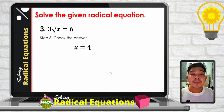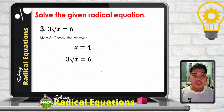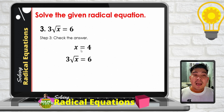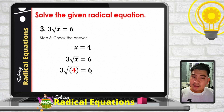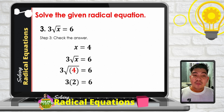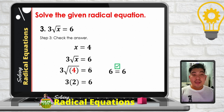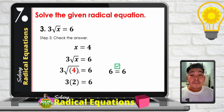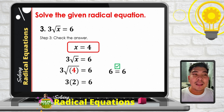Step 3: check the answer by substituting x equals 4 into the original equation: 3 times the square root of 4 equals 6. The square root of 4 is 2, and 3 times 2 is 6. Both sides are equal, so x equals 4 is a valid solution to the radical equation.